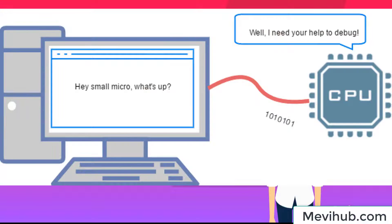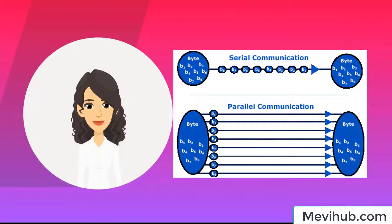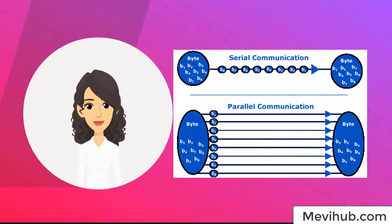Serial communication is a method of transferring data between electronic devices one bit at a time, typically over a wired connection. It involves sending data sequentially, bit by bit, over a single communication line. Unlike parallel communication, where multiple bits are transmitted simultaneously over multiple lines, serial communication uses fewer wires, making it simpler and more cost-effective for connecting devices over longer distances.